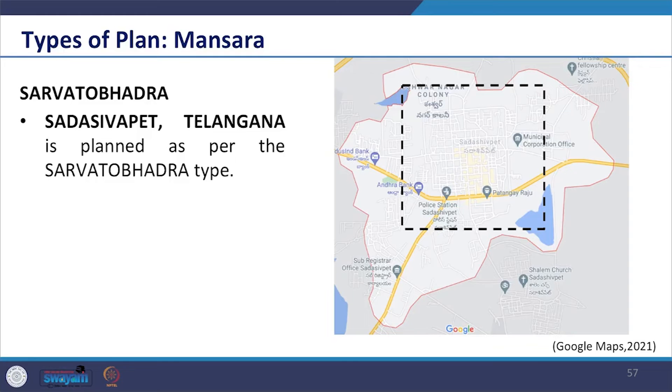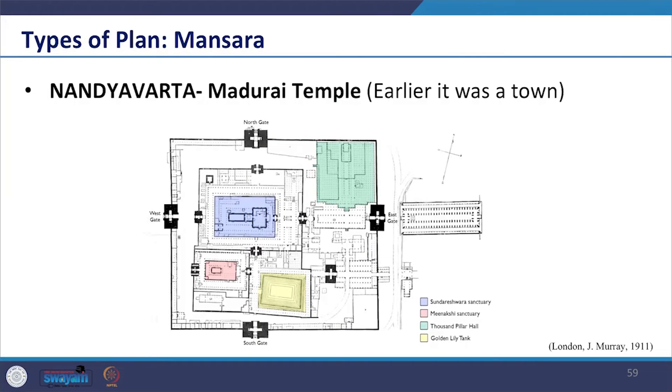Looking at Sarvato Bhadra type of plan, one example we see in our cities is Sadasi Vapith in Telangana, planned as per Sarvato Bhadra type plan. Further we see that the Madurai temple — earlier it was a town — is based on the Nandiyavarta town plan. The streets run parallel to the central adjoining streets with the temple of the presiding deity in the centre of the town. This plan is commonly used for construction of towns and not for villages, and is generally adopted for sites either circular or square in shape, covering 3000 to 4000 houses.